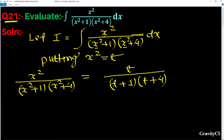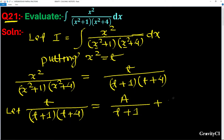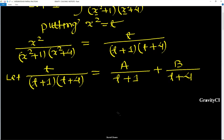So we apply partial fractions. Let t/((t+1)(t+4)) be decomposed. This partial fraction equals A/(t+1) plus B/(t+4).